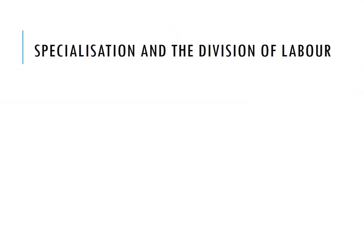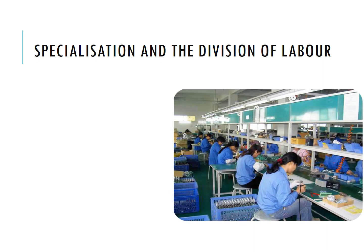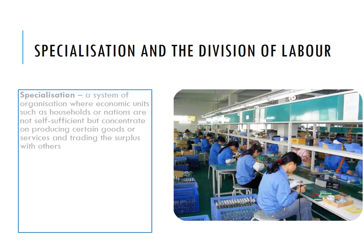This phenomenon is known as specialization. Specialization is a system where economic agents and households are not self-sufficient, but they specialize in one particular item, become very good at it, and then trade that item with other people. This can apply to economies that focus maybe just on shipbuilding, or economies that focus maybe just on financial services.